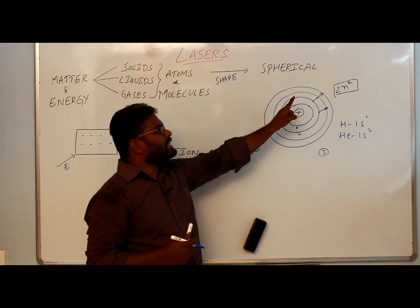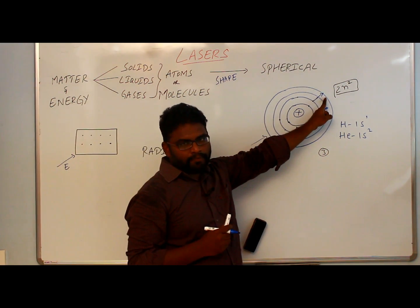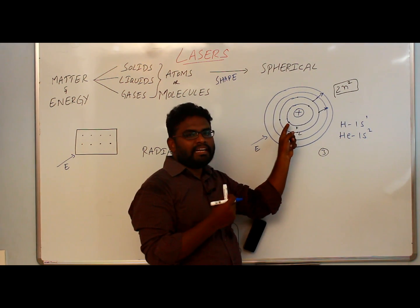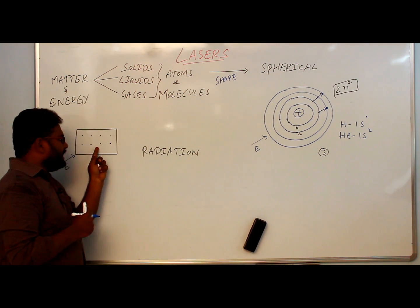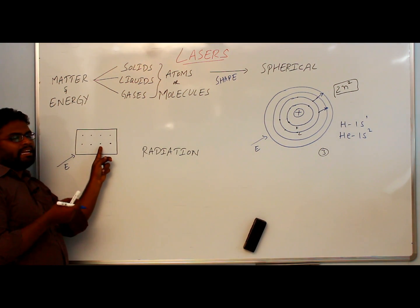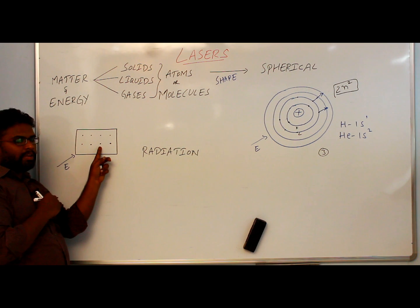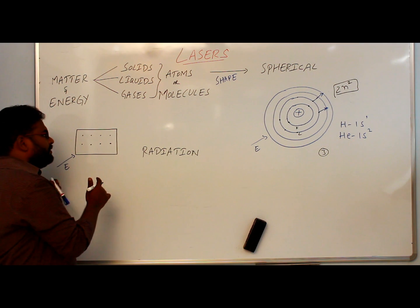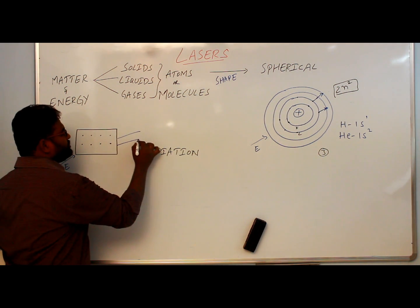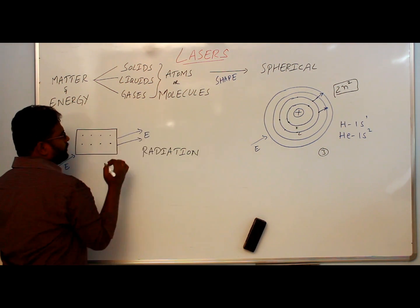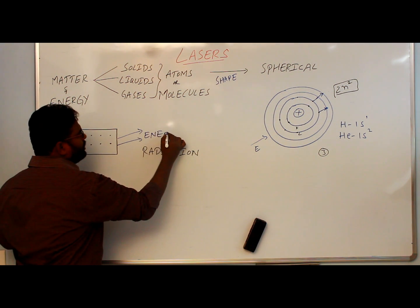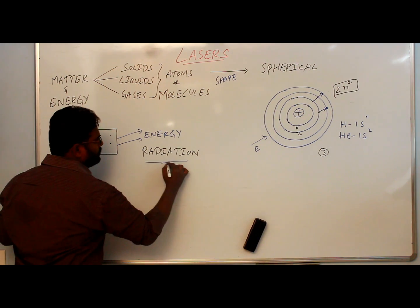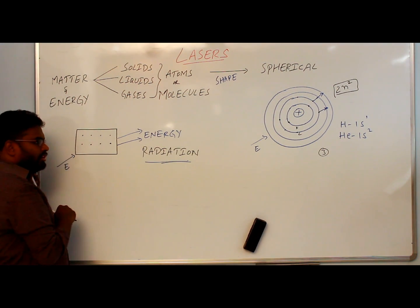The position of an electron in the excited state is not permanent. After some time it will come back to the ground state. While coming to the ground state, it emits some energy. So overall, the material or solid will emit some kind of energy outside. This emitting of energy is called radiation, and we are going to discuss the types of radiation.